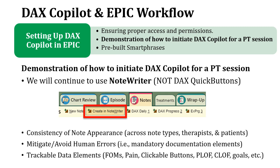Secondary to that, we're going to mitigate and avoid human errors. By utilizing note writer, we keep a lot of the hard stops that would otherwise lead to unintentional errors — be it billing mistakes, be it due dates of progress notes, and so on. This allows us to ensure that we're still hitting the mandatory documentation elements, particularly within the eval and the progress note, but also within the daily as well. And using note writer because of the clickable buttons will allow for trackable data elements.